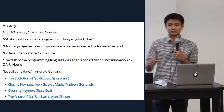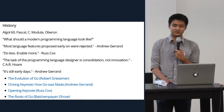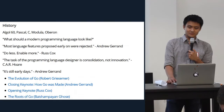Another big topic was history — historical context both in terms of how Go has evolved over time and what are the roots of Go, where did it come from. The five probably most influential languages in the Go lineage were Algol 60, Pascal, C, Modula, and Oberon.